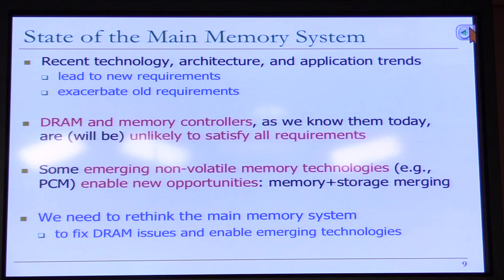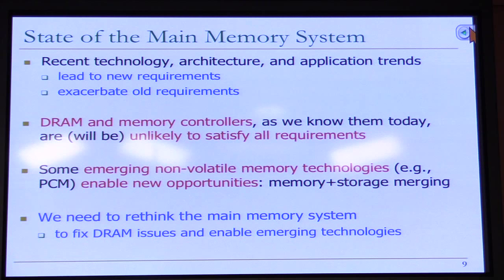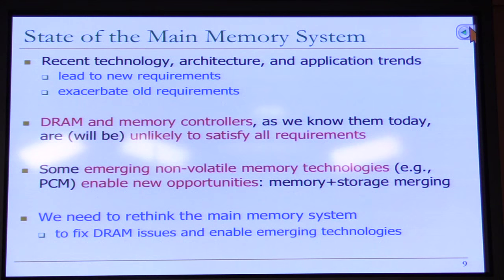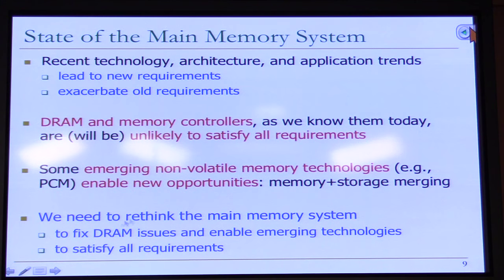We need to fix the issues with DRAM and enable emerging memory technologies. Some of you may have heard the announcement from Intel and Micron on 3D XPoint — that's one of the emerging memory technologies. It's marketed as really fast, high capacity, low latency, low energy, with very good endurance. There's good reason to believe that could be phase change technology. We need to look at the main memory system in a new way to fix DRAM issues and enable emerging technology while satisfying all requirements.